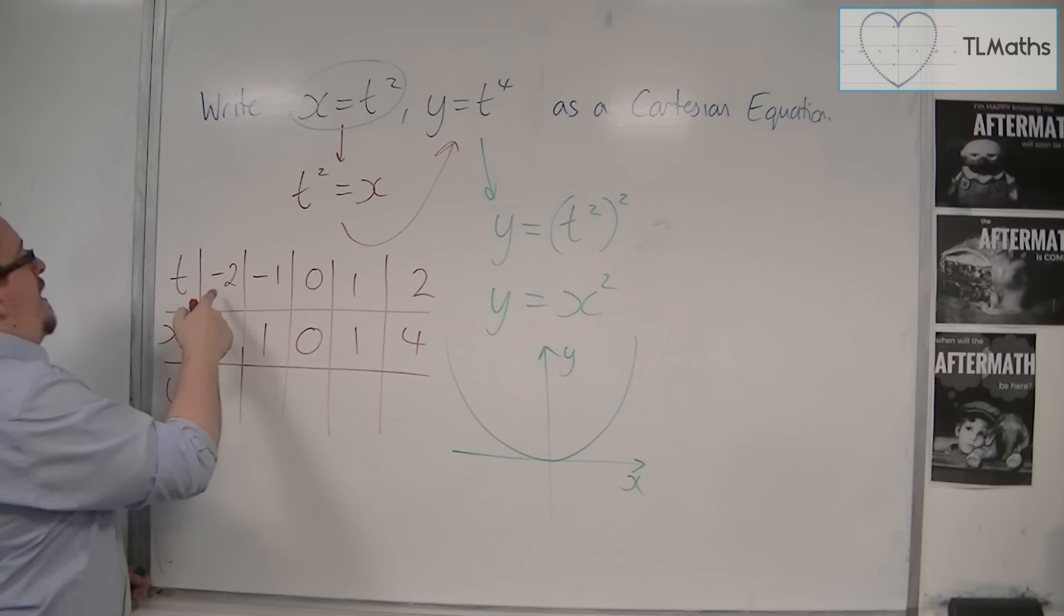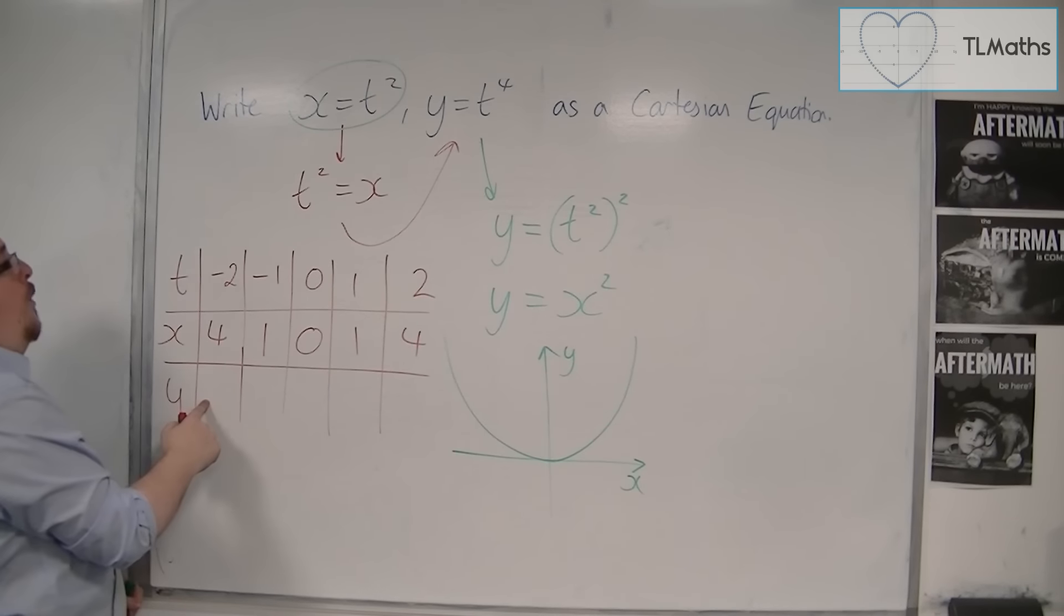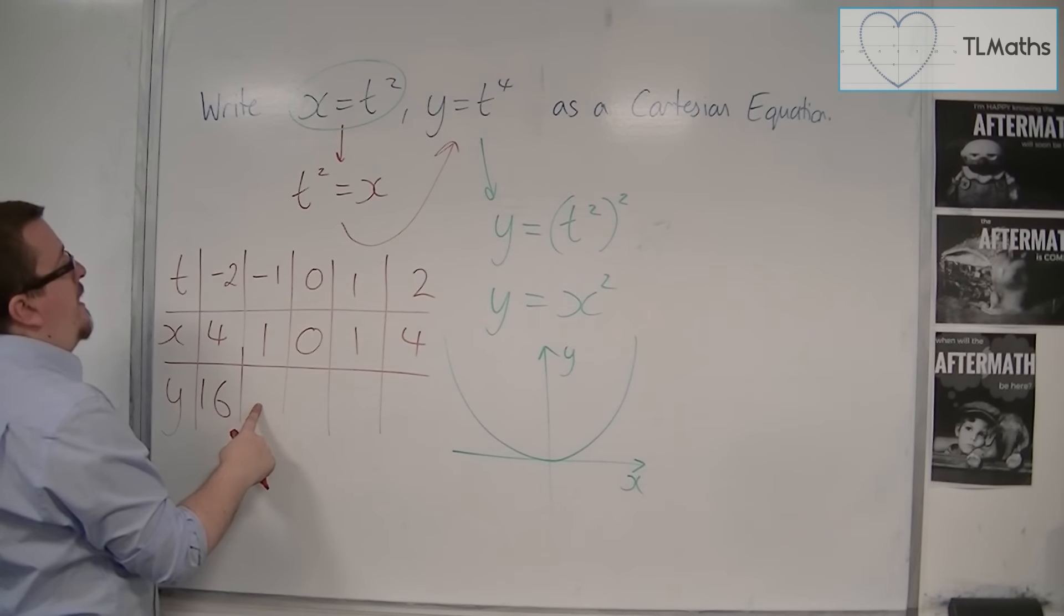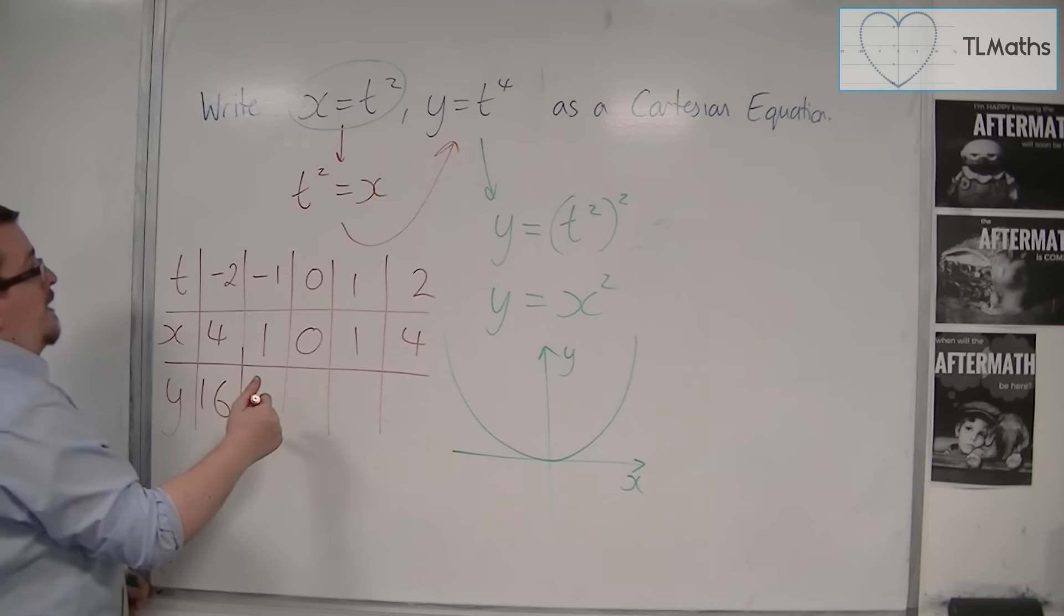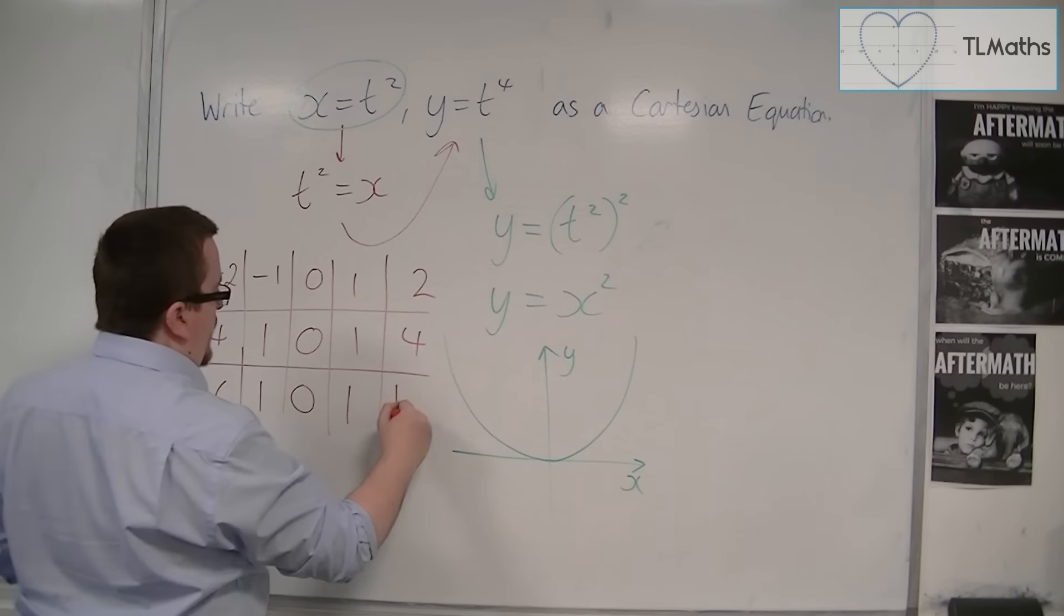When t is minus 2, then we have y being equal to 16. When t is minus 1, we get y is equal to 1. We'll get 0 there, 1, and 16.